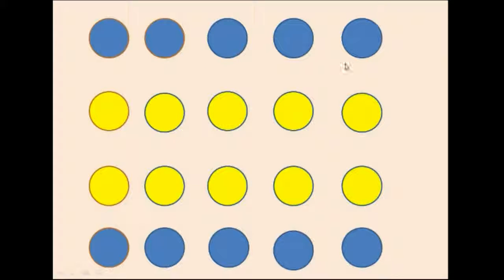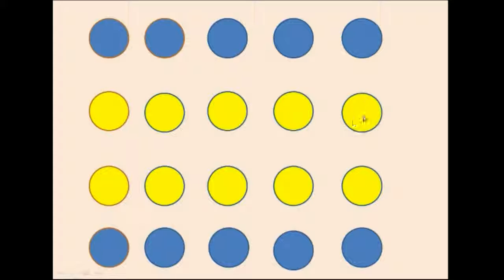So our number needed to treat would be two. And that correctly correlates with this diagram in which we can see that we would need to prevent the disease in two people in order to prevent one potential case of that outcome.